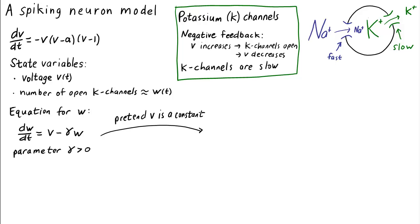If we pretend for a moment that V is a constant number, we can analyze this equation. It has one equilibrium, W equals V over gamma. Do you know how to show that this equilibrium is stable? Remember, gamma is positive, so the derivative of the right-hand side with respect to W will always be negative gamma, a negative number.